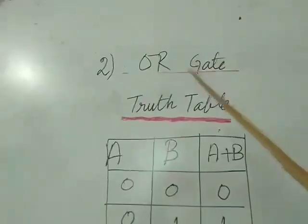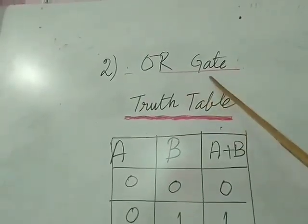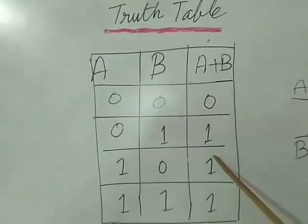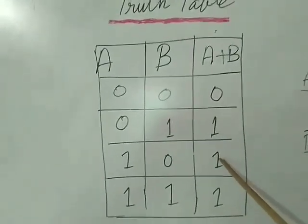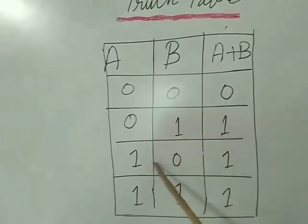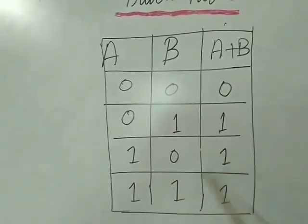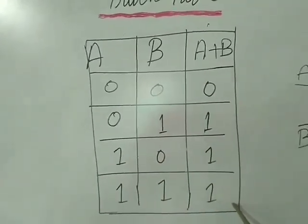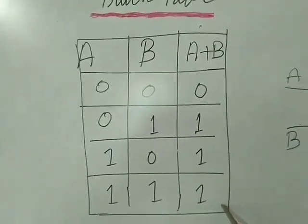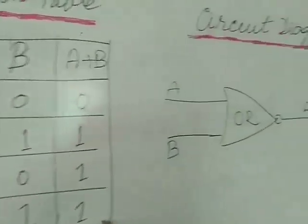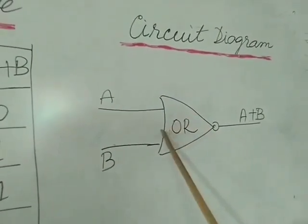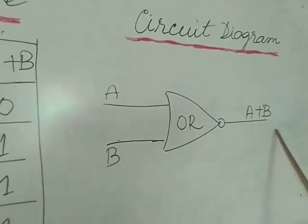The truth table for the OR gate — it performs normal addition. So: 0+0=0, 0+1=1, 1+0=1, 1+1=1. It follows the rules of addition. The circuit diagram shows A and B as inputs and this is the output.